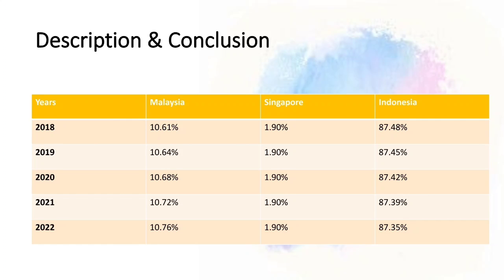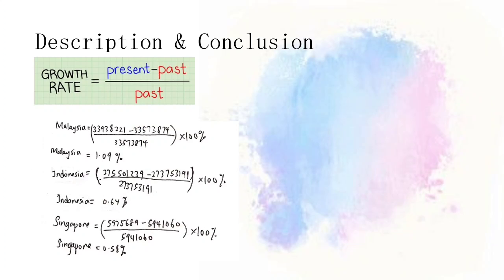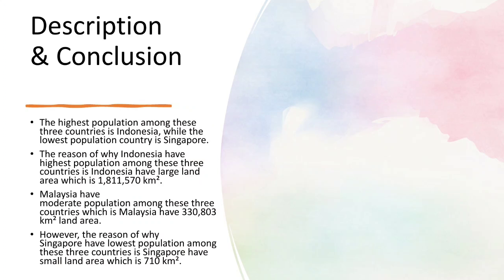This table shows the overall percentage of the three countries from 2018 to 2022. The formula used is the population of the country in that year divided by the total population of the three countries, times 100%. For growth rate, the formula is the present population minus the past population, divided by the past population, times 100%. Malaysia has the highest growth rate compared to the other two countries, although it does not have the highest population. The highest population among the three countries is Indonesia.